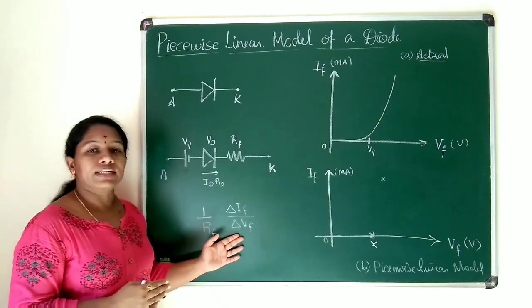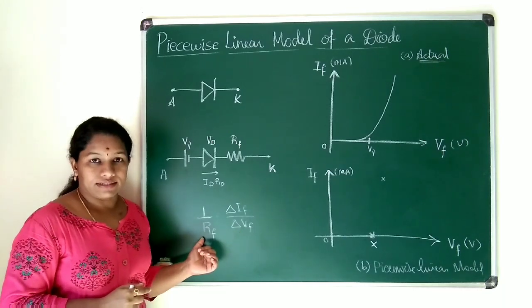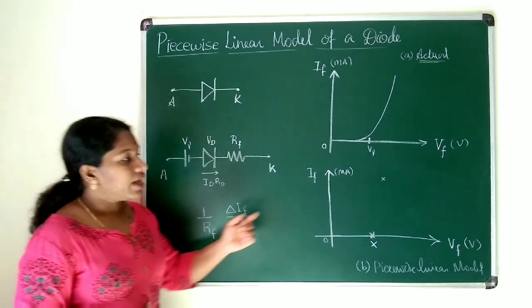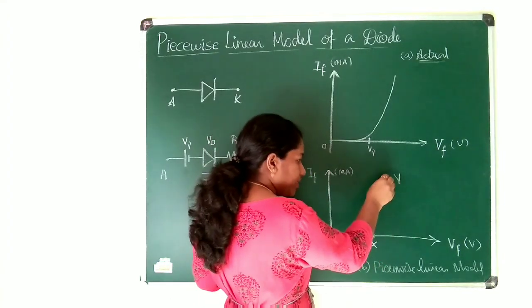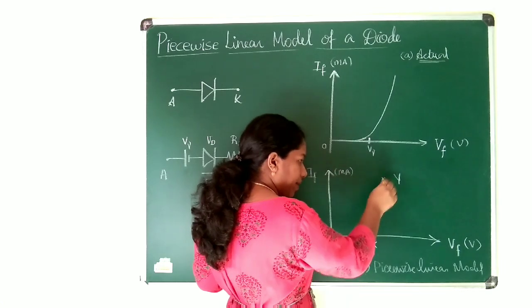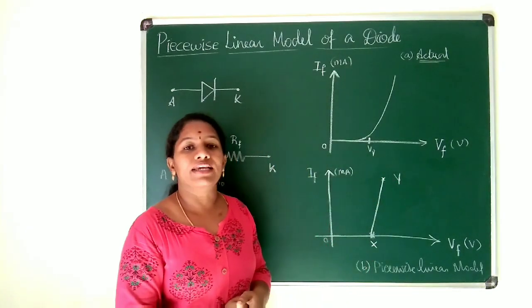The slope of the linear curve equals the reciprocal of the resistance. Using this concept, I get a point here named Y. I join these two points.